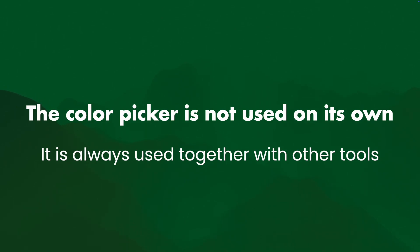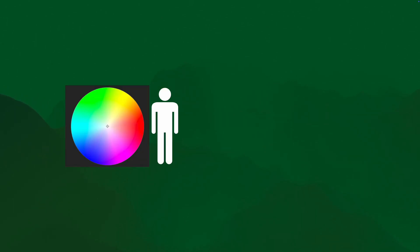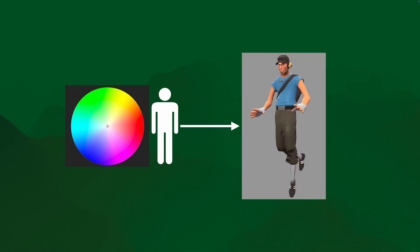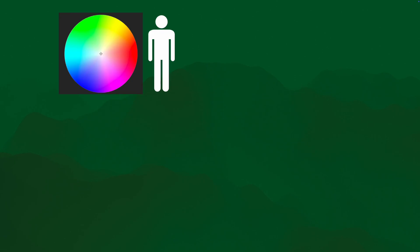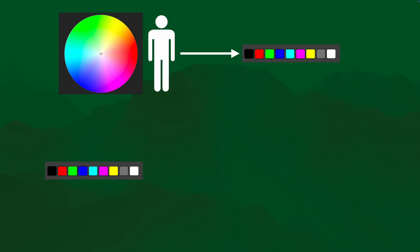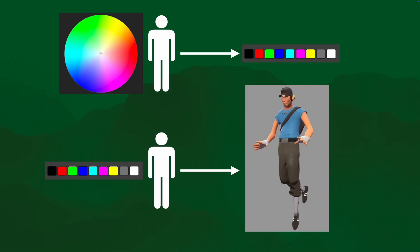So from a workflow standpoint, there's an artist somewhere and they're using a color picker, but they're not just directly applying that to Scout's pants. That's wrong — two colors, slightly off, difficult to spot. Instead, they look at a color picker, select what color they need, put it in a swatch, and then someone else can use that swatch and apply it to Scout's pants. And that's the correct way of doing it.